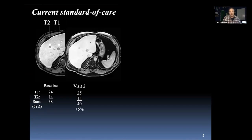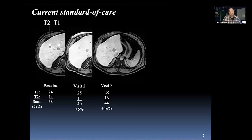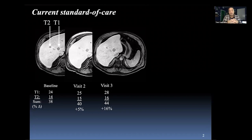The patient goes on treatment and comes back. There's been very little change — maybe a 5% increase in the measurement. Then at visit 3, there's a 16% increase. The patient's changes are put into one of four bins: if the tumor has completely gone away, it's a complete response; if it's shrunk by 30% or more, it's a partial response; if it's grown by 20% or more, it's progressive disease; and if it's none of those, it's stable disease. So at visit 3, it's still stable disease because it hasn't crossed that 20% threshold.